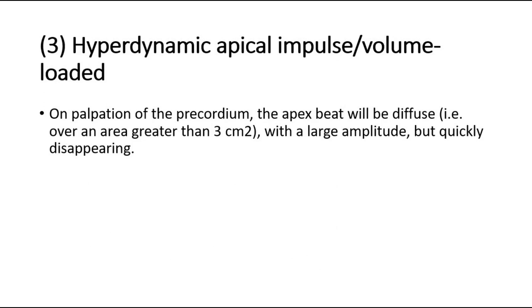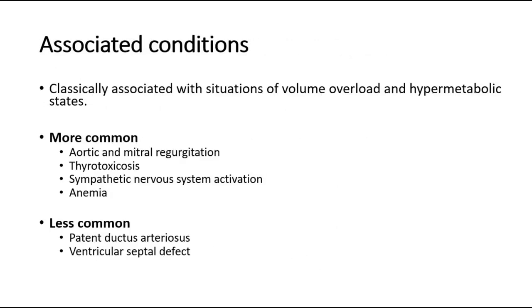On palpation of the precordium, the apex beat will be diffuse with a large amplitude, but quickly disappearing. This is classically associated with situations of volume overload and hypermetabolic states. The more common causes are aortic and mitral regurgitation, thyrotoxicosis, sympathetic nervous system activation, and anemia.